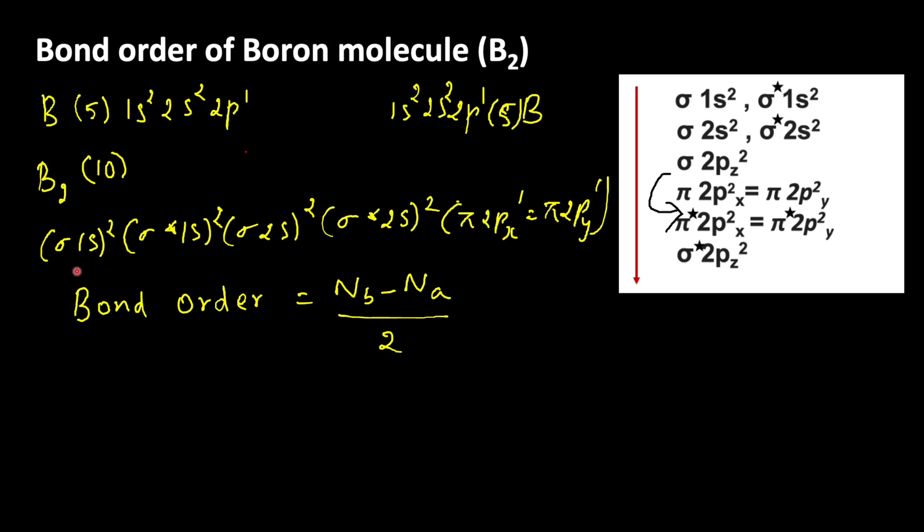For bonding electrons: sigma 1s2, so 2 electrons. Sigma 2s2, so 2 plus 2 equals 4, and pi 2px 1 and pi 2py 1. So, 5 plus 1 equals 6. So, 6 bonding electrons are present.